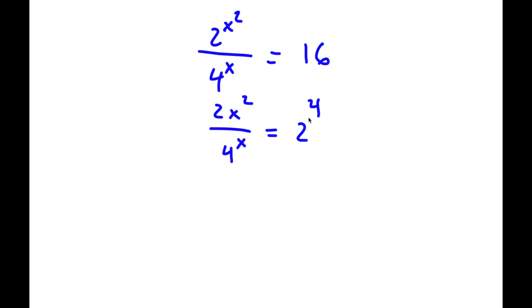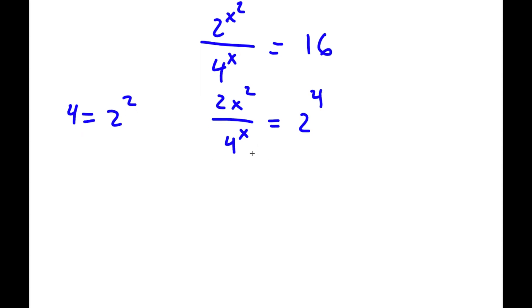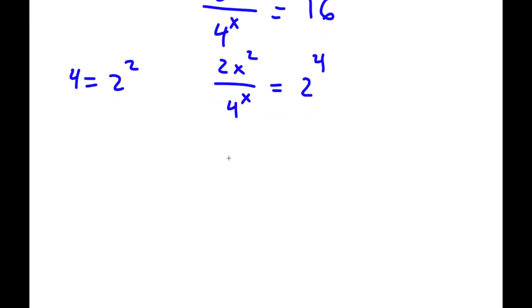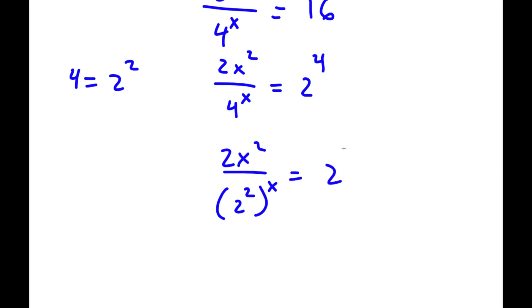Now, as you can see, I'm trying to put 2 in all my terms here. So the only one remaining is 4 to the power of x. And 4, this is the same thing as 2 squared. So I'm going to replace 4 with 2 squared. So now I have 2^(x²) over 2 squared to the power of x is equal to 2 to the power of 4.